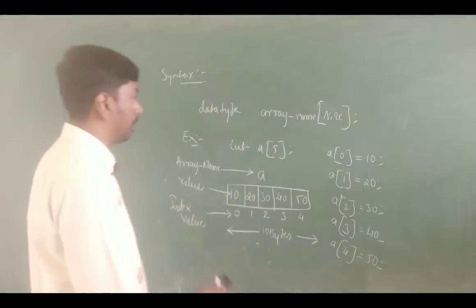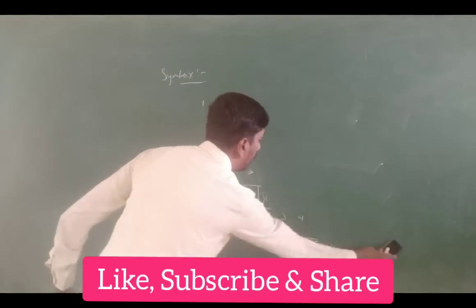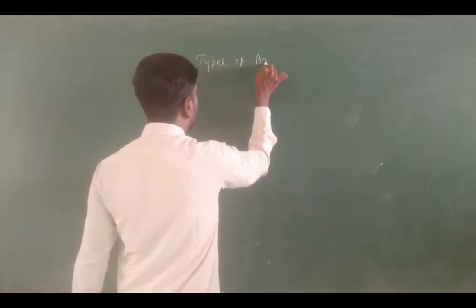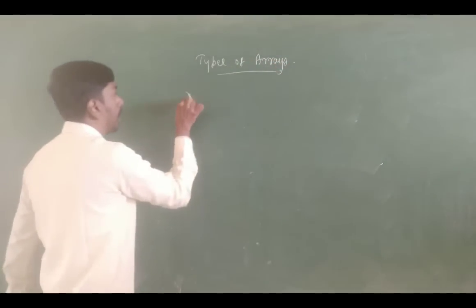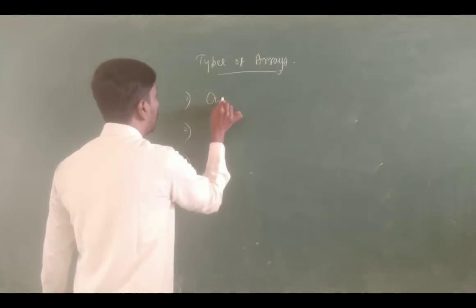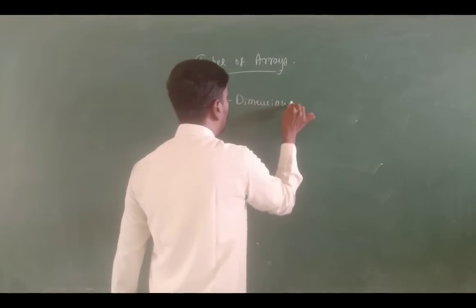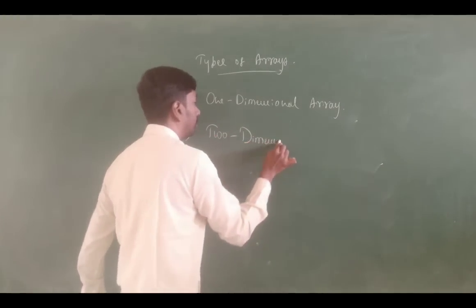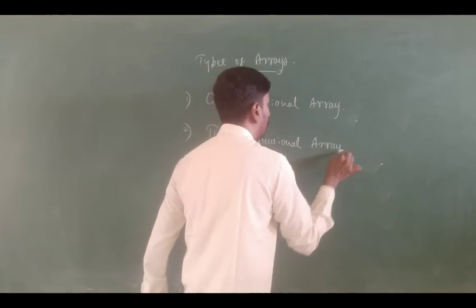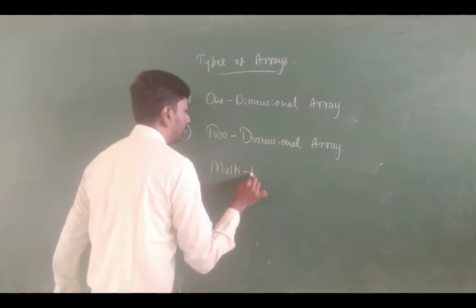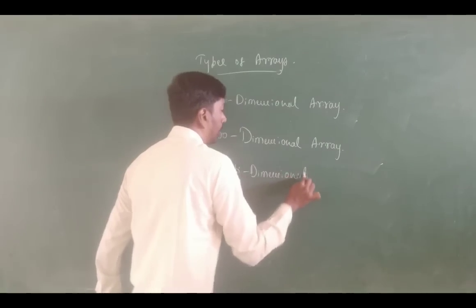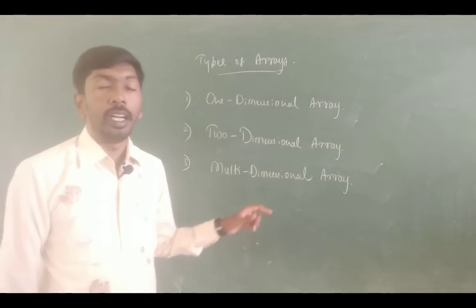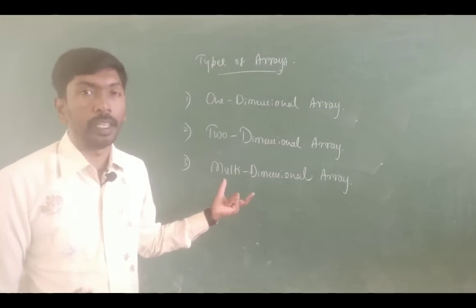Now, types of arrays. Arrays are classified into 3 types: the first is called a one-dimensional array, the next one is a two-dimensional array, and the next one is a multidimensional array.